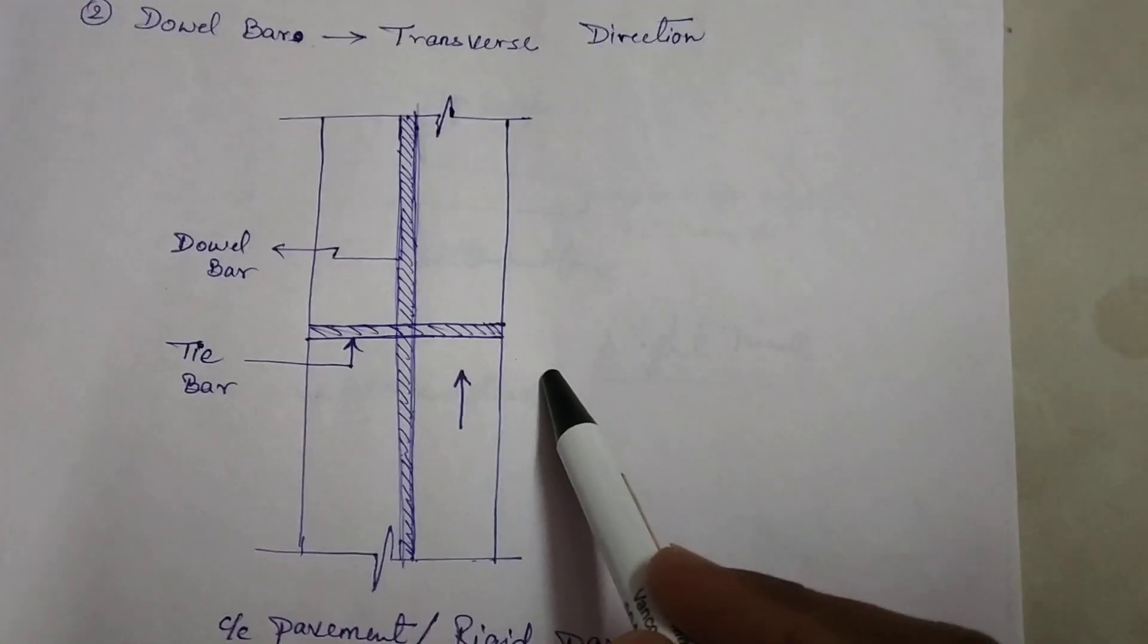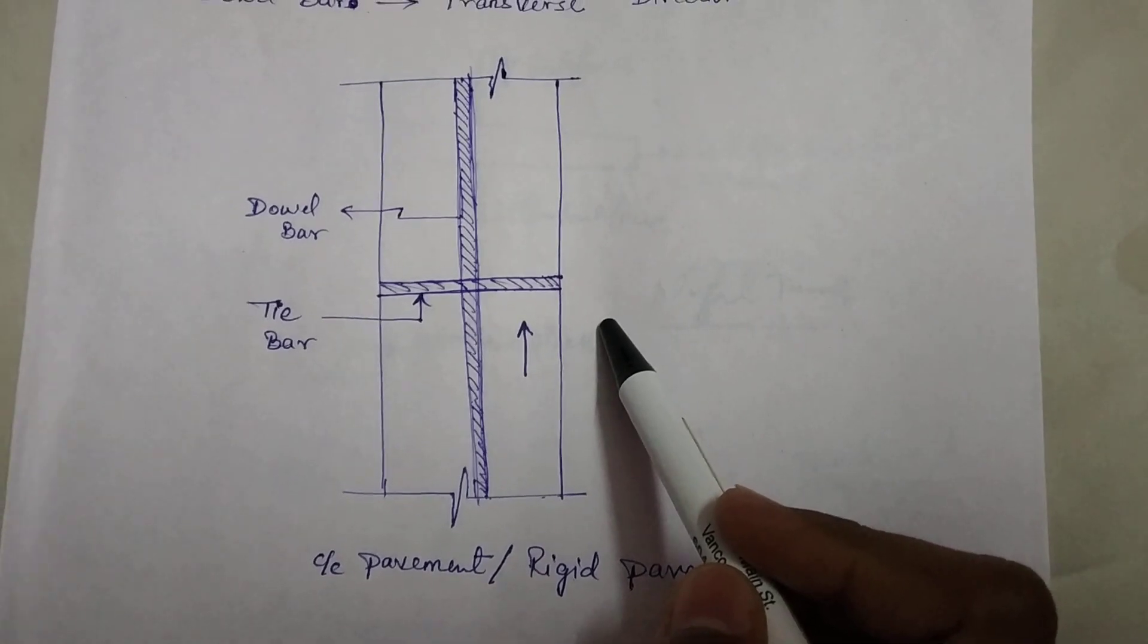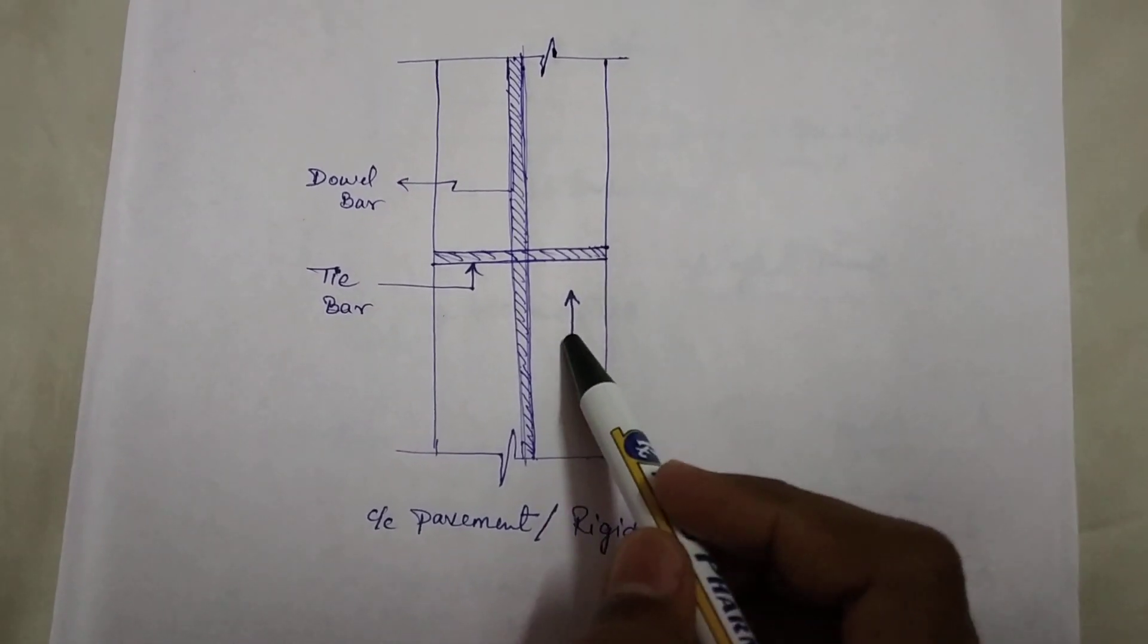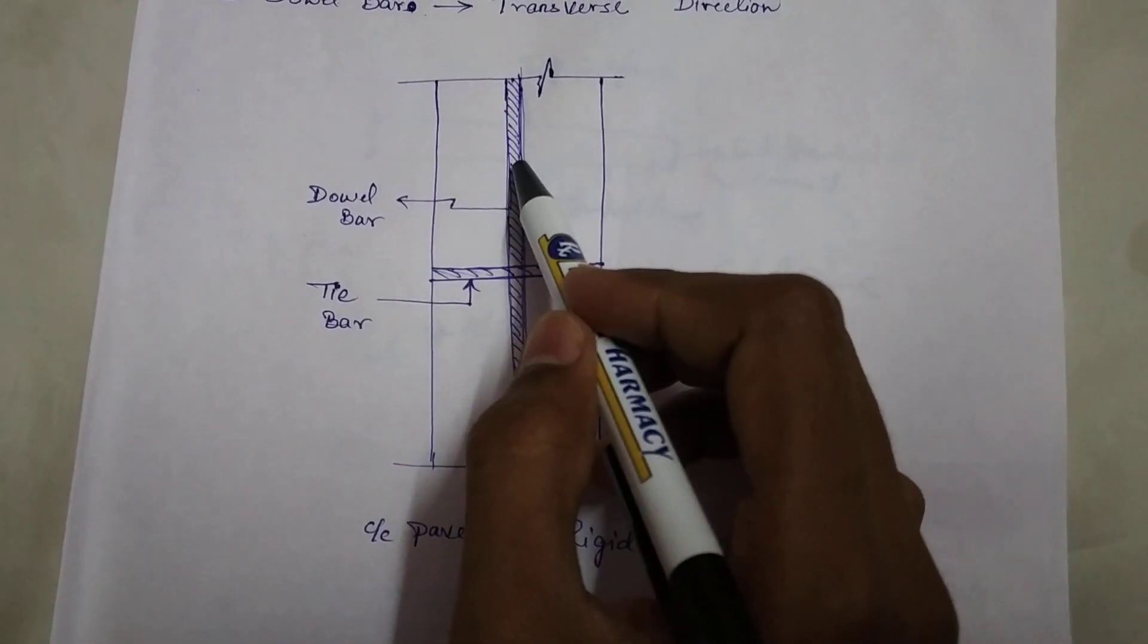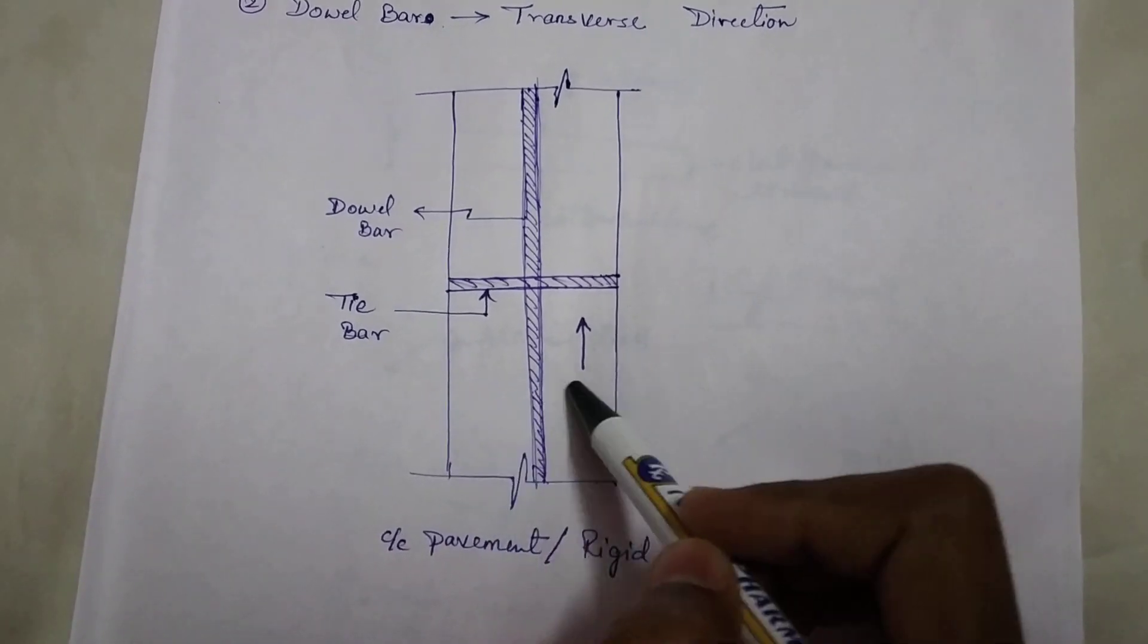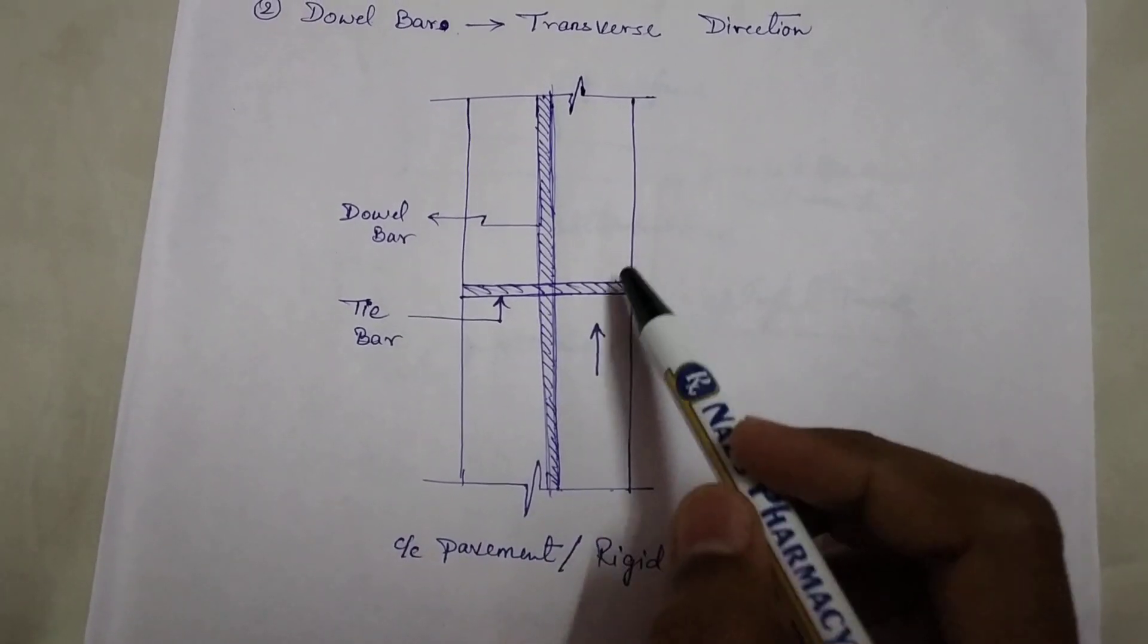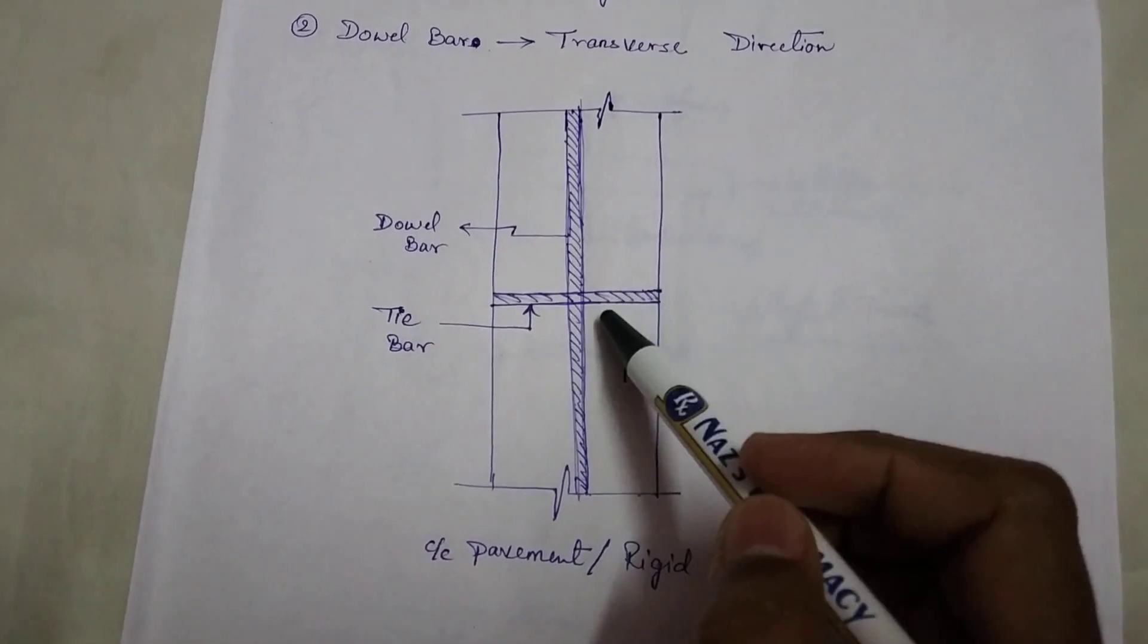For example, how we can remember what is tie bar and what is dowel bar. Consider this as the CC pavement or rigid pavement. If you are moving in the lengthwise direction of the pavement the bar is termed as dowel bar. If you are moving in the widthwise direction on the pavement it is termed as tie bar. Ok, remember.